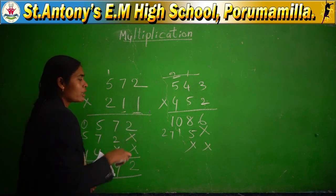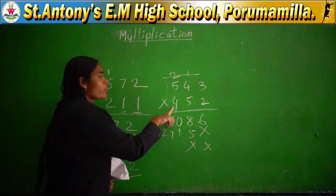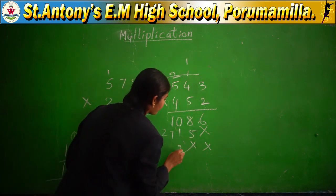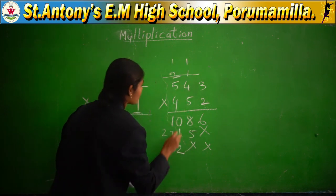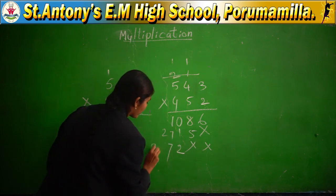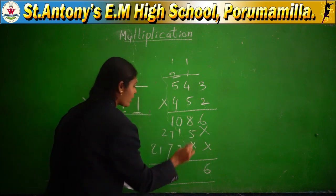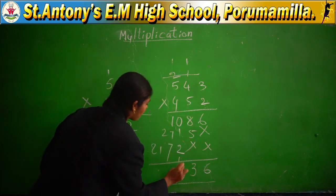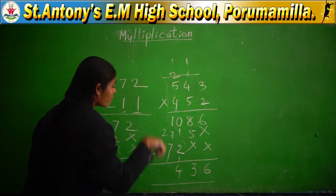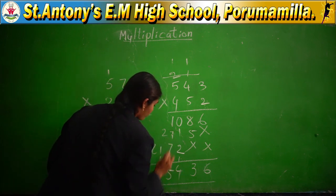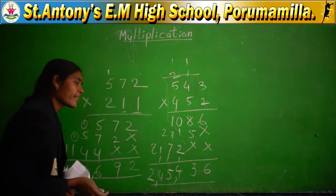Next last digit is 4. 4 threes are 12, 4 fours are 16 plus 1 is 17, 4 fives are 20 plus 1 is 21. Now add the columns: 6, 8 plus 5 is 13, 4 plus 7 plus 7 is 14 plus 1 is 15, and so on. The answer is 2,45,436.